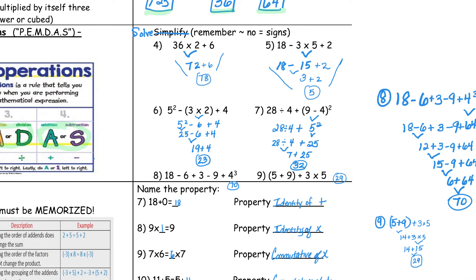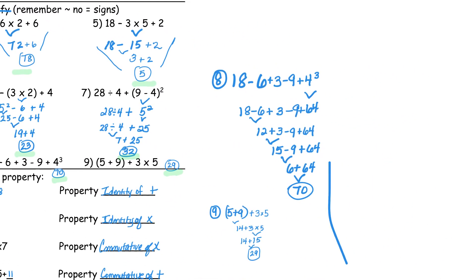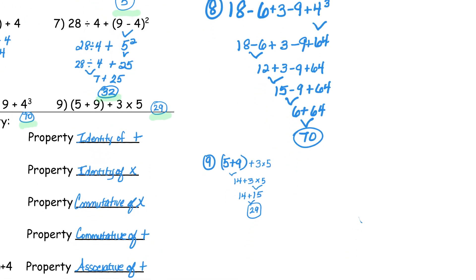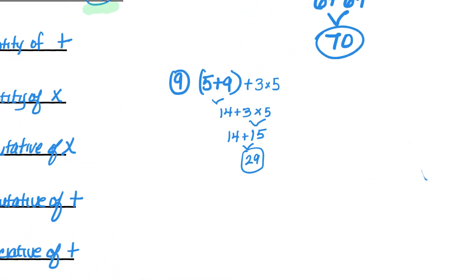For number 4, the answer was 78. For number 5, the answer was 5. Number 6, the answer was 23. Number 7, the answer was 32. For number 8, the answer was 70. Number 9 — if you couldn't see it, it's fine — the answer was 29. Here is the work for number 8, and then we have the work for number 9 below it, and the answer right there is 29.